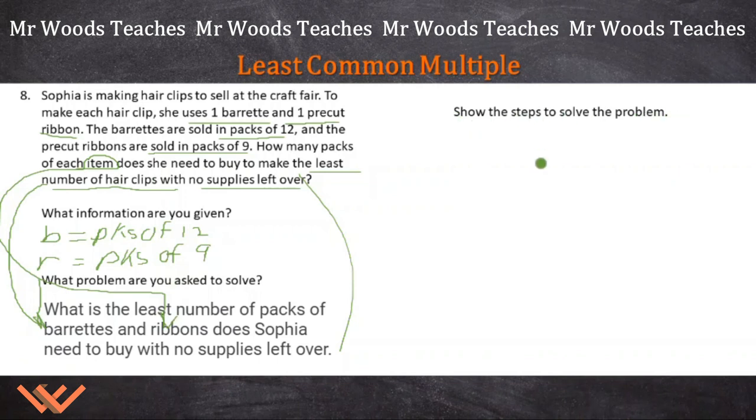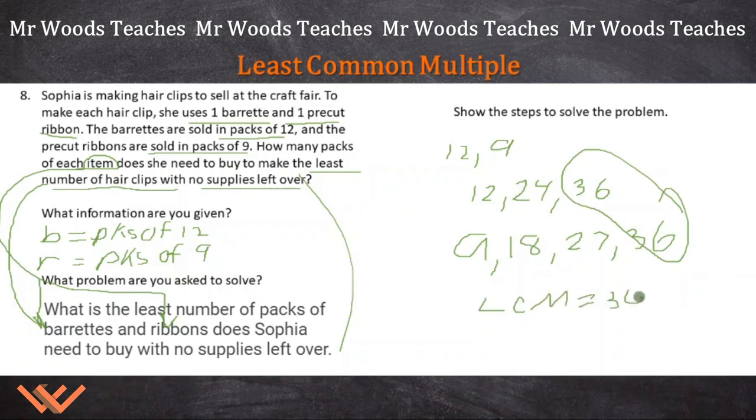Next, show the steps to solve the problem. Well, we're trying to find the least common multiple of these packages of barrettes and ribbons. So we have 12 and 9. Set it up just like this. And then we just go through 12, 24, 36. And no, I can stop because I know my multiplication table for 12s and 9s. 9, 18, 27, and 36. There's our least common multiple. So the LCM equals 36. But wait, is that the answer to it? No. We're going to need to have 1, 2, 3 packs of barrettes. So I'm going to say B is equal to 3. And R, the package of ribbons, is equal to 1, 2, 3, 4. Again, go back and do it like this. Write up a sentence that says, Sophia will need 3 packages of barrettes and 4 packages of ribbons to make 36 hair clips in all with no supplies left over.